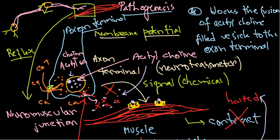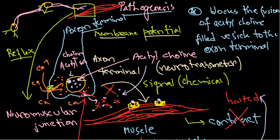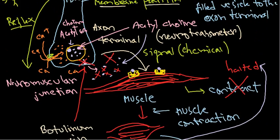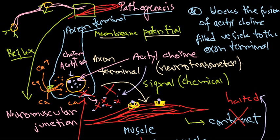No muscle contraction means reduced ability to contract the muscle, giving rise to flaccid paralysis. Spastic paralysis, by contrast, is caused by tetanus via a different mechanism. The botulinum toxin is the major component in any kind of pathogenesis for Clostridium botulinum — even without the organism itself, the toxin alone can cause disease.